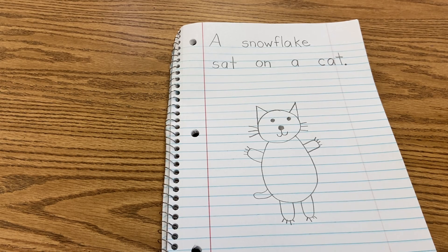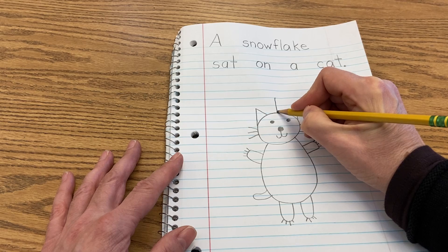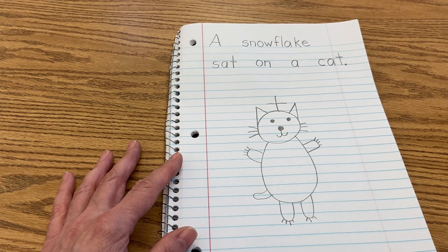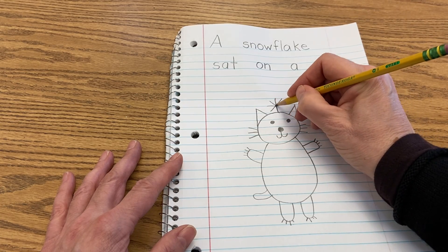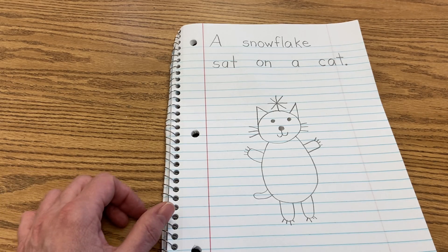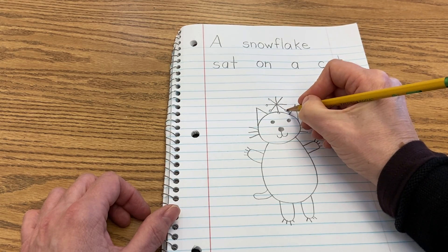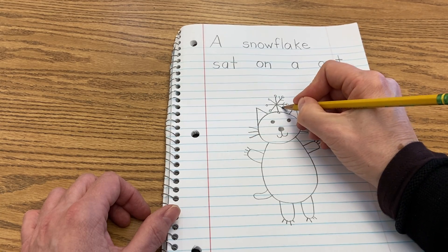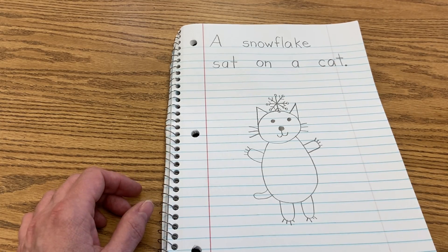Finish drawing your cat. Then there's the snowflake that sat on the cat. To make the snowflake, draw a line up from the cat's head — remember, it's going to sit on the cat. Then cross that line to make it look like a T. Then a slanted line, and another slanted line, making an X and an X. If you want to get really fancy, you can put little circles on the ends. No two snowflakes ever look alike. And if you want to get super fancy, you can make little slanted lines coming out of the snowflake.